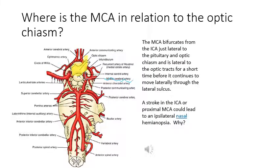The internal carotid artery and the proximal part of the middle cerebral artery are very close to the optic chiasm. So if you have any hemorrhage from these arteries, it can affect the vision pathway. The patient may have ipsilateral nasal visual field loss — connect this to our previous lecture and think about why the patient has this visual field deficit.